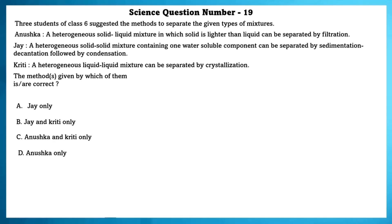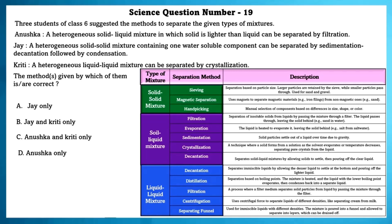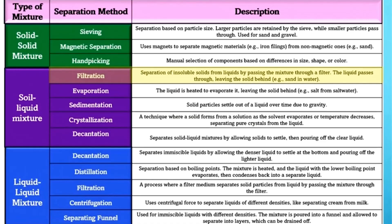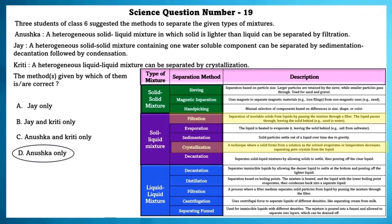Science question number 19. Three students suggest methods to separate given types of mixtures. Anushka said a heterogeneous solid-liquid mixture can be separated by filtration — yes, this is true. Jai said a heterogeneous solid-solid mixture can be separated by sedimentation and decantation — this is false, because sedimentation and decantation applies to solid-liquid mixtures, not solid-solid. Kirti said a heterogeneous liquid-liquid mixture can be separated by crystallization — crystallization is used for solid-liquid mixtures, not liquid-liquid. So only Anushka is correct.